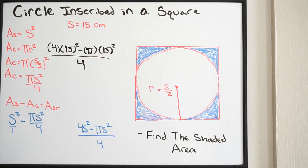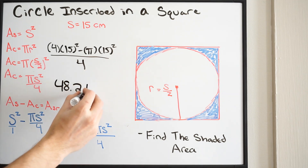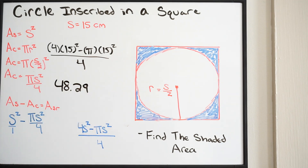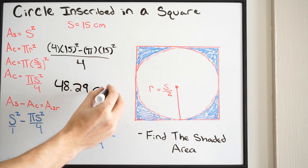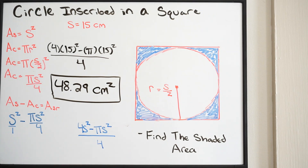Plugging in, we get 4 times 15 squared minus pi times 15 squared, divided by 4. We're going to round this, and we get 48.29. Since we're talking about area, this is going to be centimeters squared. So 48.29 cm² is our final answer.